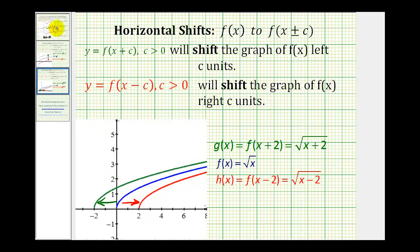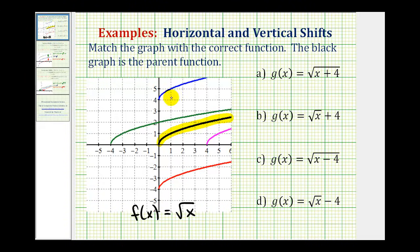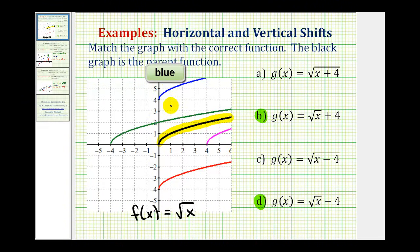Going back to our example, let's identify the blue and red functions. Remember, because the shift is up or down, the constant would be outside the square root, which means blue and red must be either function b or function d. Function b is g(x) = √x + 4, and since the plus four is outside the square root, it's shifted up four units — which would be the blue graph.